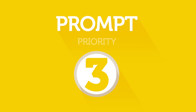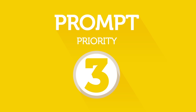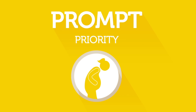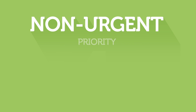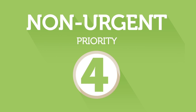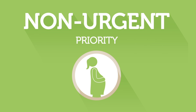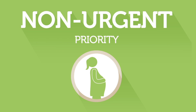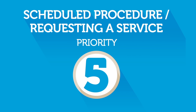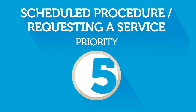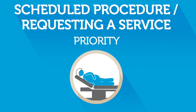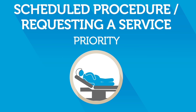Prompt, priority 3, may include situations such as signs of active labor at greater than or equal to 34 weeks. Non-urgent, priority 4, may include situations such as common discomforts of pregnancy. Scheduled procedure or requesting a service, priority 5, may include situations such as a woman scheduled for a planned elective repeat cesarean.